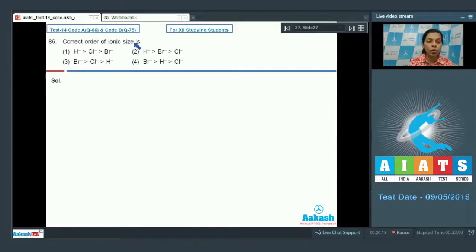After that, correct order of ionic size is, in this case, Cl⁻, Br⁻, and H⁻ (hydride ion) is also there. So if we compare chloride ion and bromide ion, you can simply say bromide ion has larger size as compared to chloride ion on the basis of its atomic number.